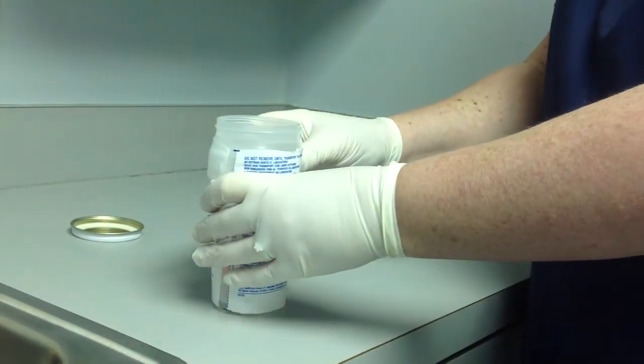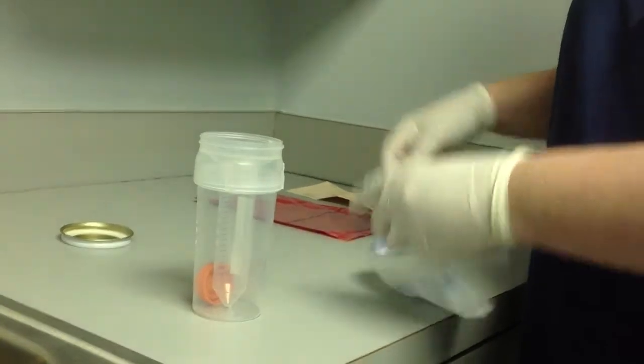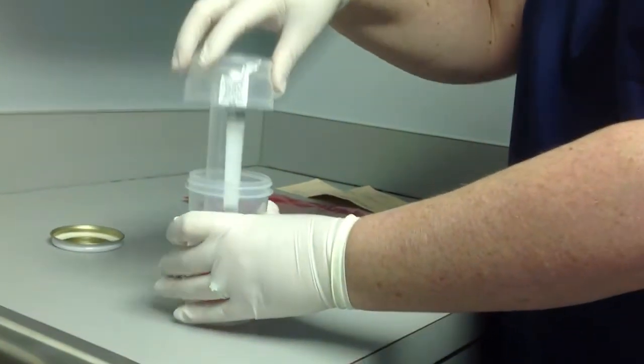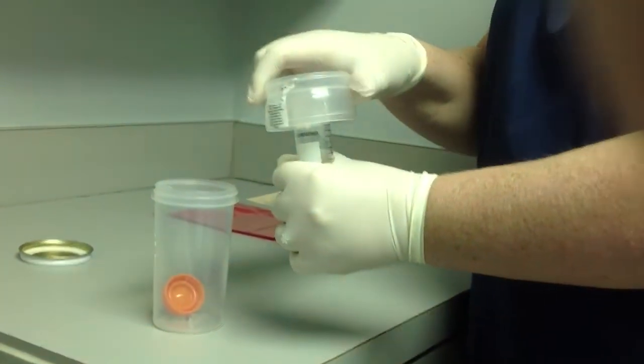After the specimen is collected, remove the plastic label from the container. Unscrew the plastic funnel from the container. Remove the 50 milliliter centrifuge tube from the funnel.